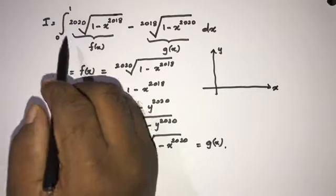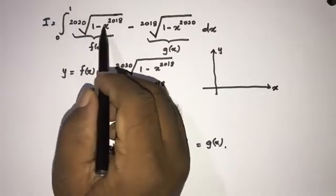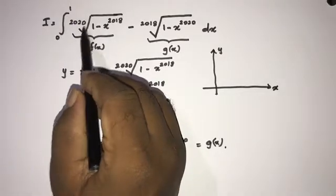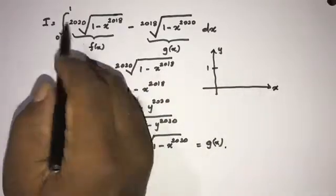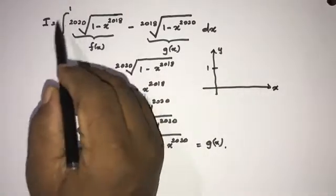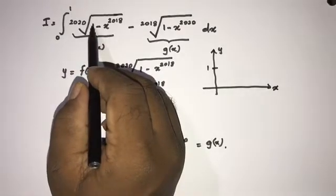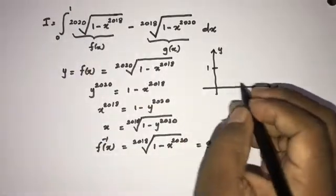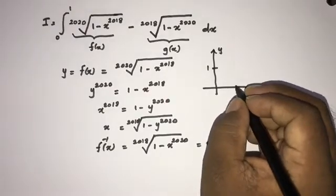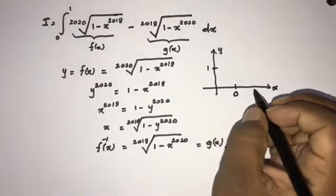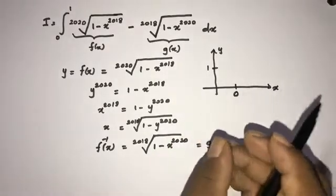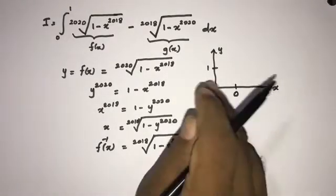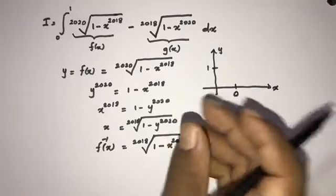So if we take the y-axis here and x-axis here, with the integral from 0 to 1, if we substitute x=0, we get 2020√1 = 1. And if we plug in x=1, we get 2020√0 = 0.